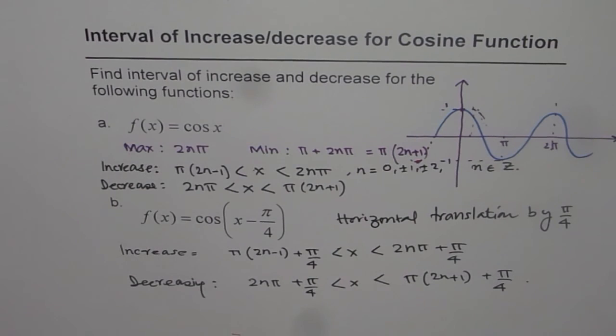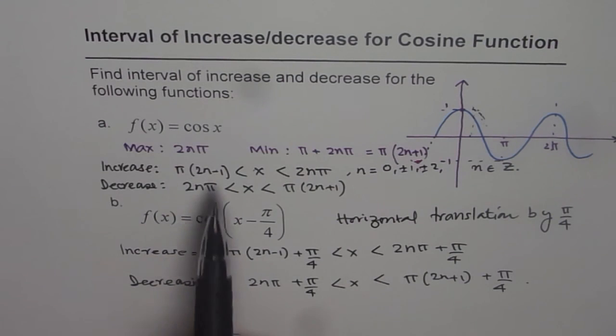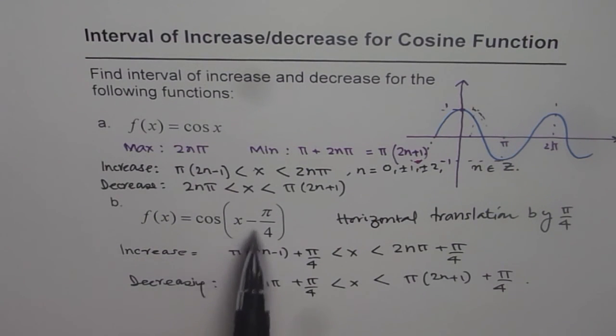As an exercise, I'll appreciate if you could write down interval of increase and decrease for sinusoidal function in these two cases, sin x and sin x minus pi by 4. Thank you.